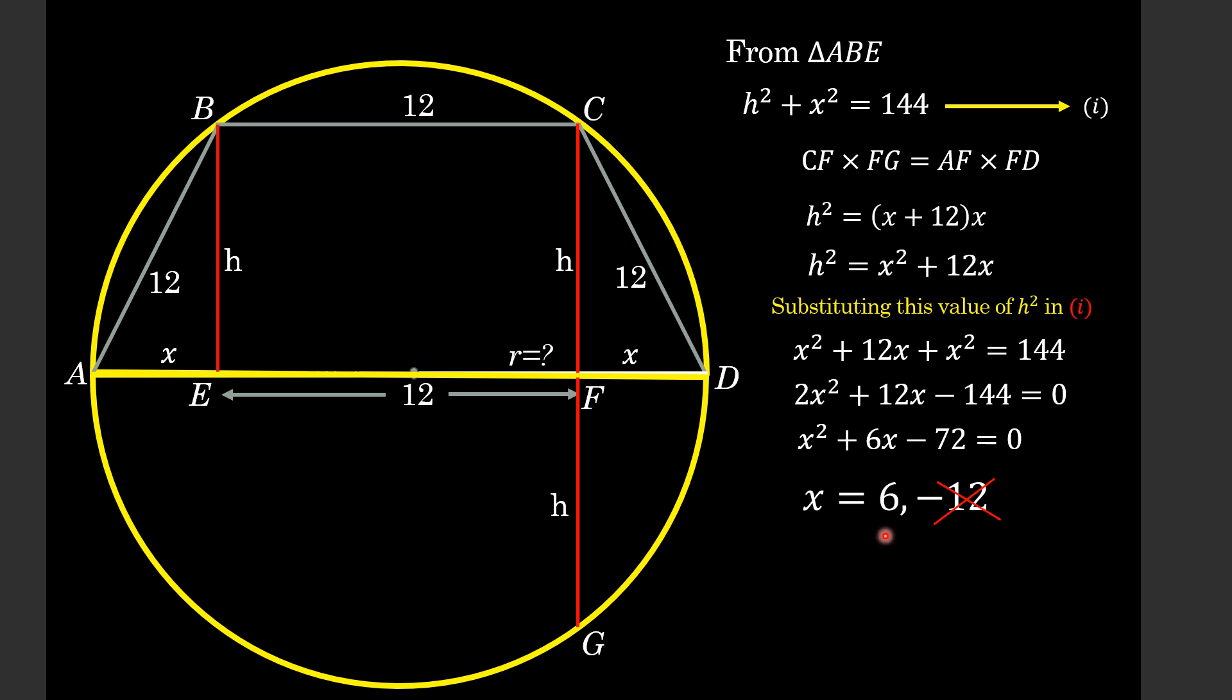So, x = 6. Now, we are writing the value of diameter which is equal to AD, that is equal to AE (that is x) plus EF (that is 12) and plus FD (that is again x).